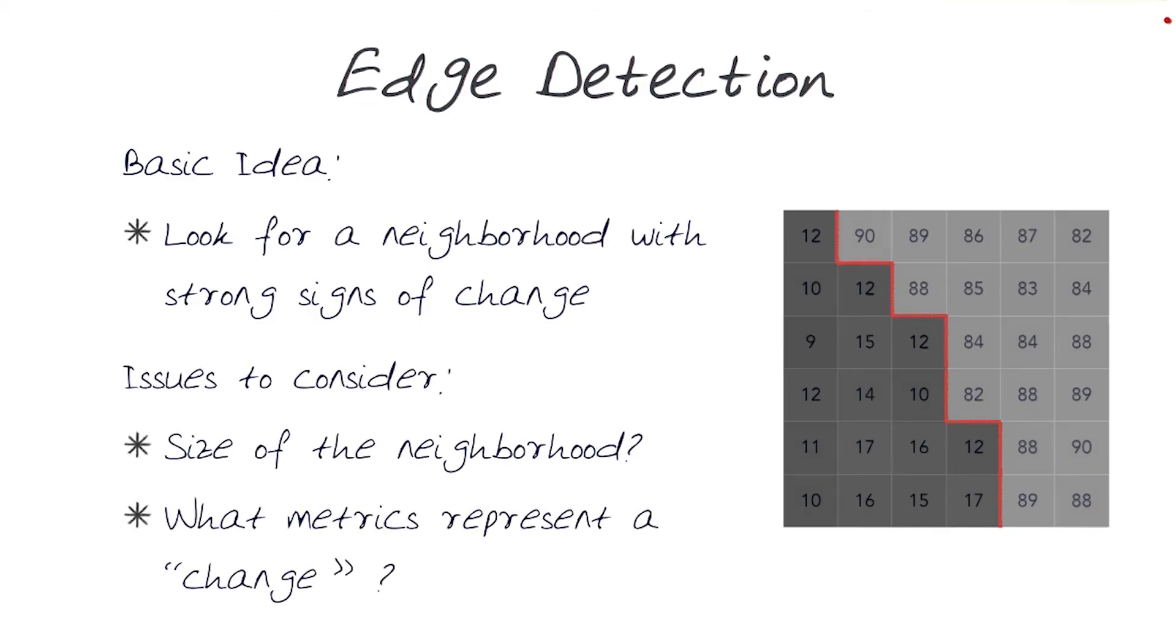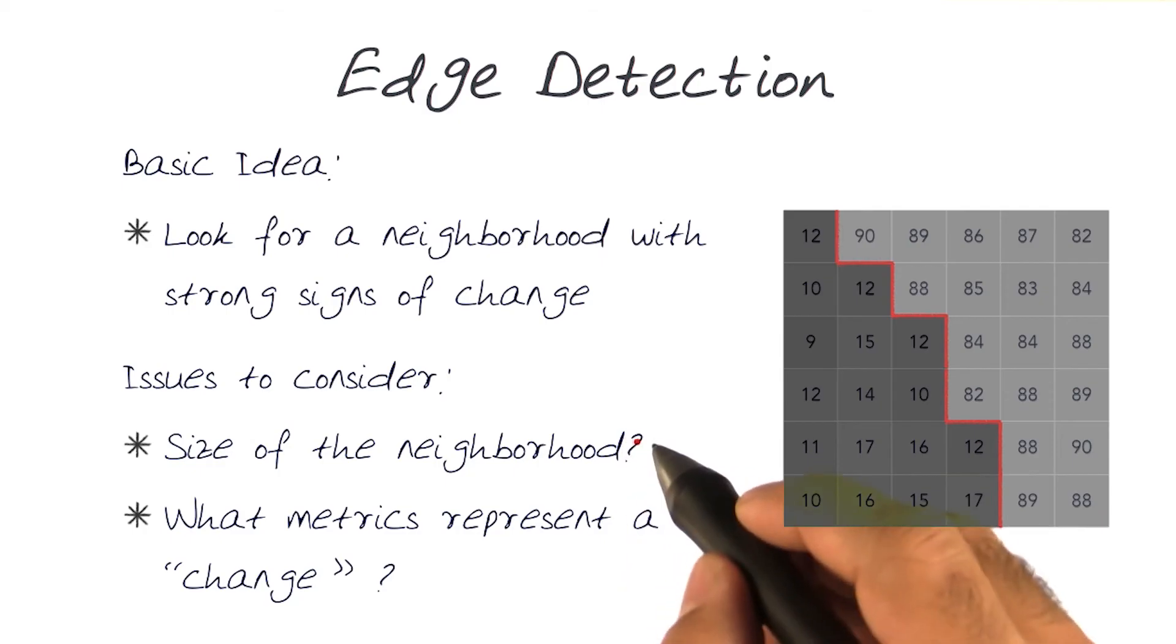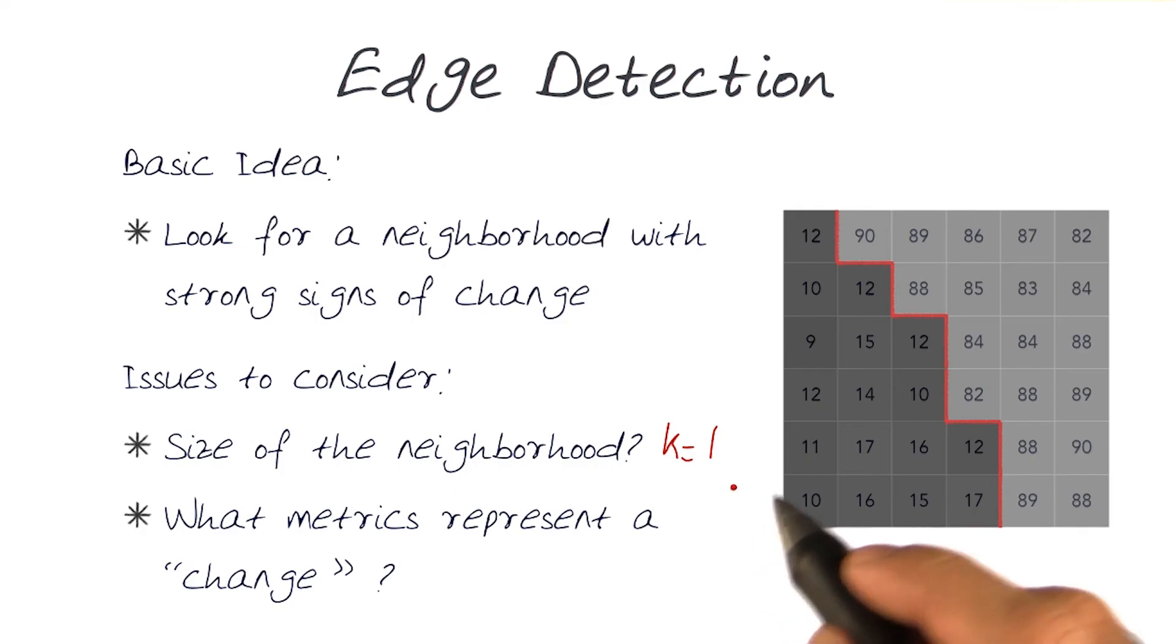So as we do this, we have to think about various things. What is the size of the neighborhood? I started off with basically the assumption that the neighborhood size, which I've always referred to, was one, because I looked at it with respect to that. Then also, what metric represents a change?